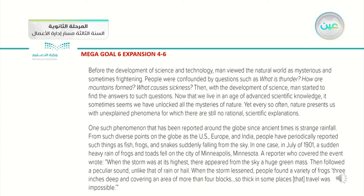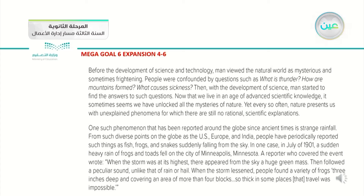In one case, in July of 1901, a sudden heavy rain of frogs and toads fell on the city of Minneapolis, Minnesota. A reporter who covered the event wrote: 'When the storm was at its highest, there appeared from the sky a huge green mass, then followed a peculiar sound, unlike that of rain or hail. When the storm lessened, people found a variety of frogs, three inches deep and covering an area of more than four blocks, so thick in some places that travel was impossible.'